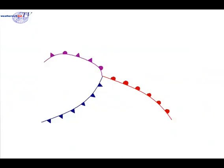Firstly, let's remind ourselves what we mean by a front. A front is simply an area which marks a boundary between two airmasses. In the case of a cold front, it's where cold air is displacing warm air ahead of it.